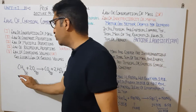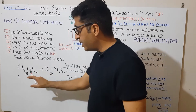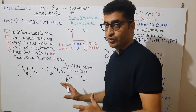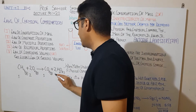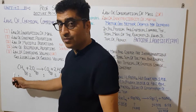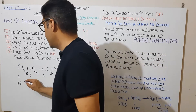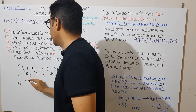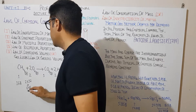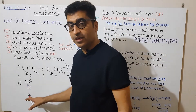If we use one mole of methane, how many moles of oxygen will we use? Two moles. So one mole of CH4 reacts with two moles of O2. One mole of CH4 has a molar mass of 16 grams. Two moles of O2 have a mass of 2 × 32 = 64 grams. So 16 grams of methane reacts with 64 grams of oxygen.